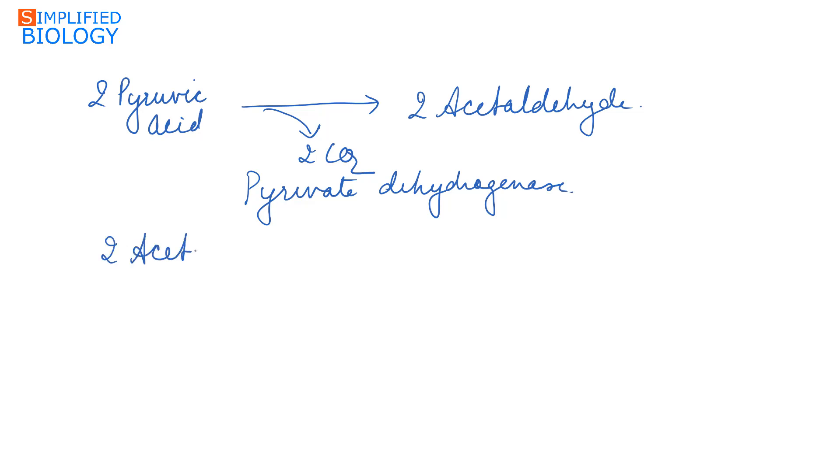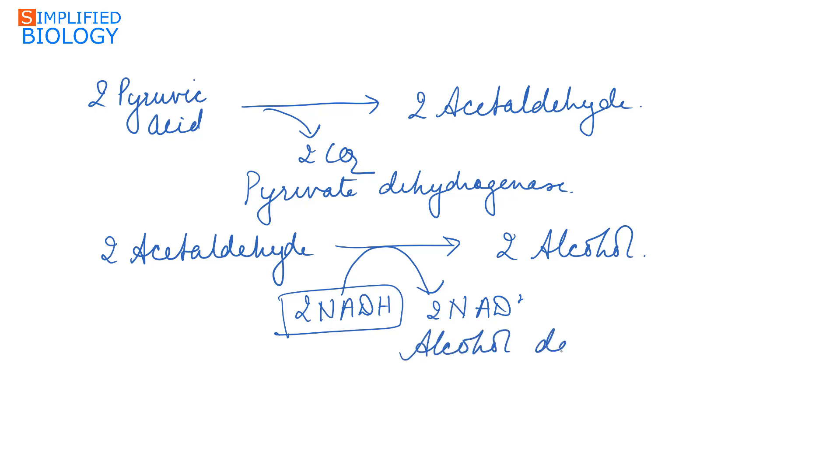Acetaldehyde is then reduced by NADH to form alcohol, which means the two NADH that were formed during glycolysis are used here. This occurs in the presence of enzyme alcohol dehydrogenase. So the net gain in case of anaerobic respiration or fermentation is just two ATP. Less than 7% of the energy present in glucose is released during anaerobic respiration.